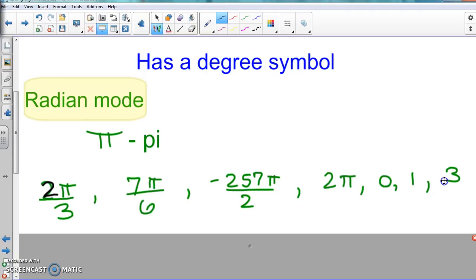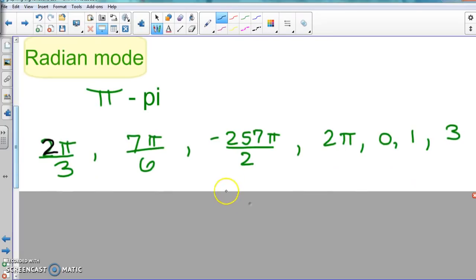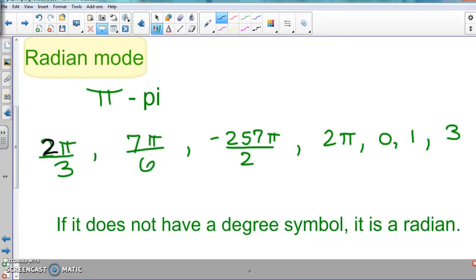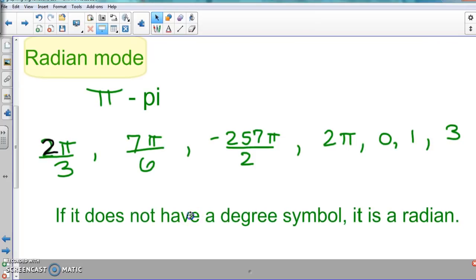So again, with this, make sure if it's not a degree symbol there, it's radian. If it does not have a degree symbol, it is considered a radian.